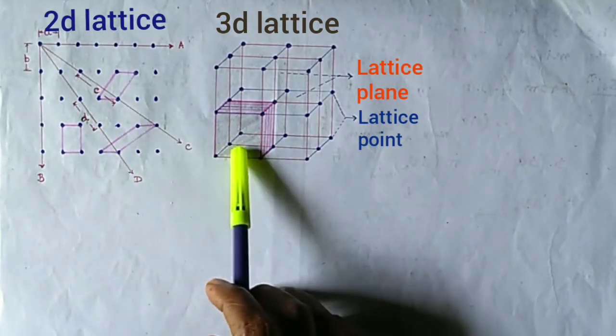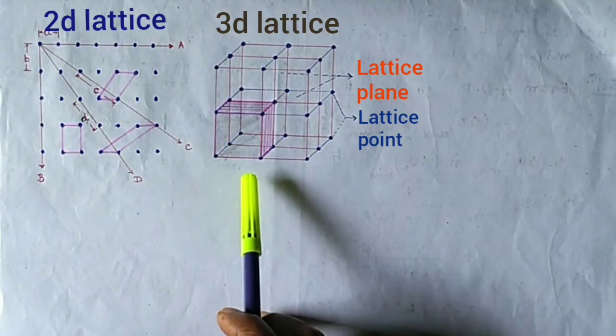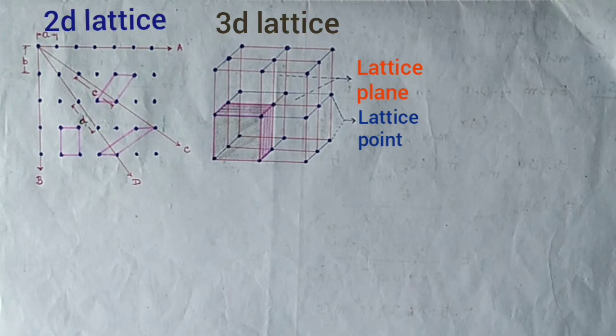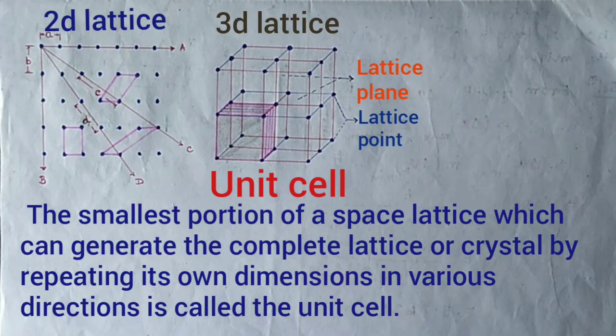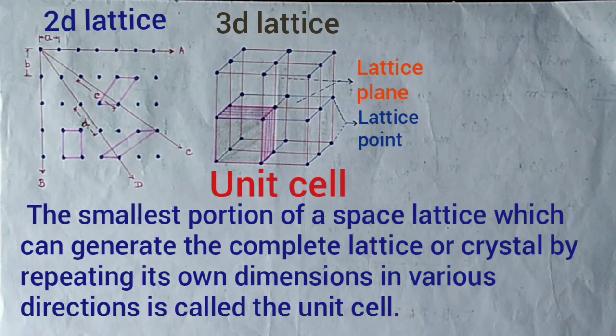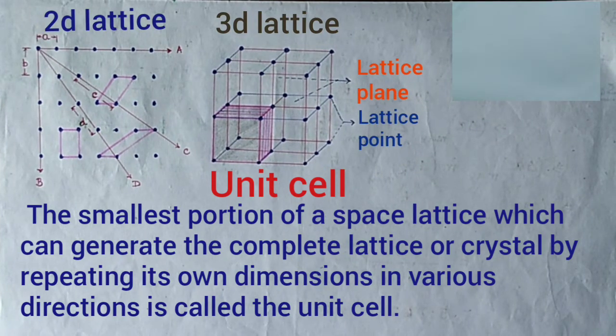This smallest portion is called the unit cell. Thus, we may define the unit cell as the smallest portion of a space lattice which can generate a complete lattice or crystal by repeating its own dimensions in various directions.